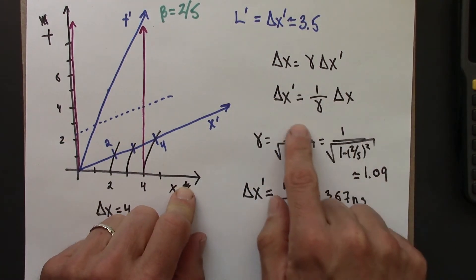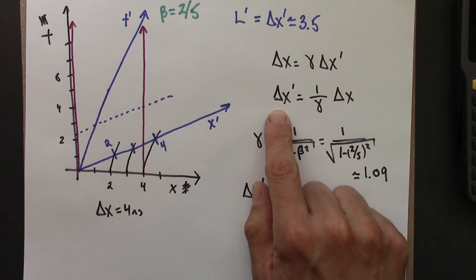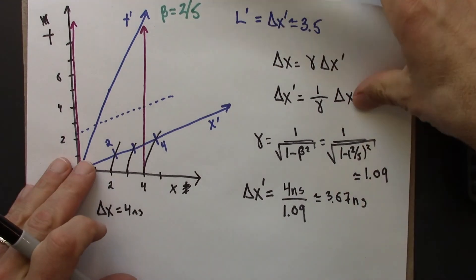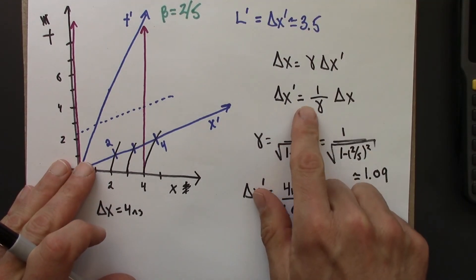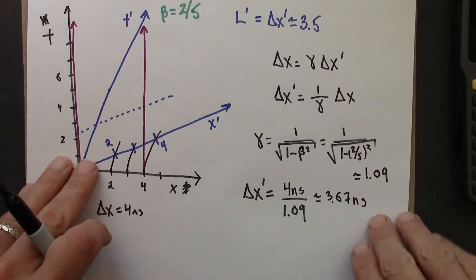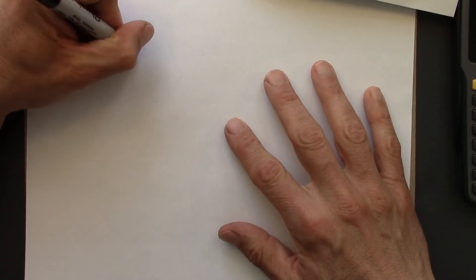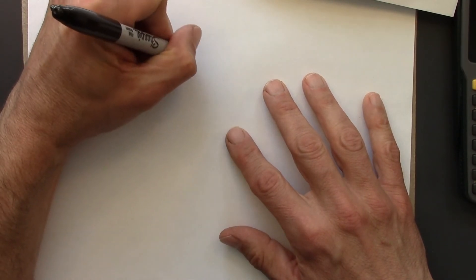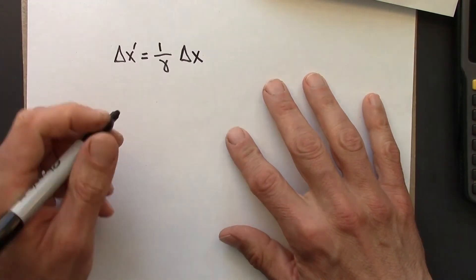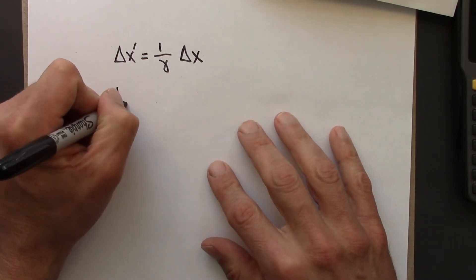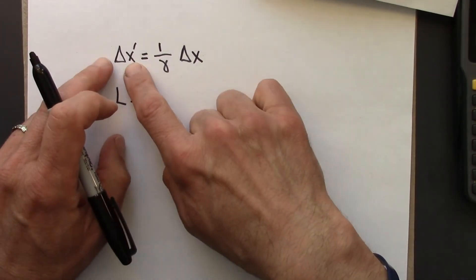Alright, so let's focus on this relationship. And let me do just a little bit of algebra on that to write this in a slightly different way. So we have delta x' is 1 over gamma delta x. And the way this is often written, so delta x' is length. 1 over gamma.